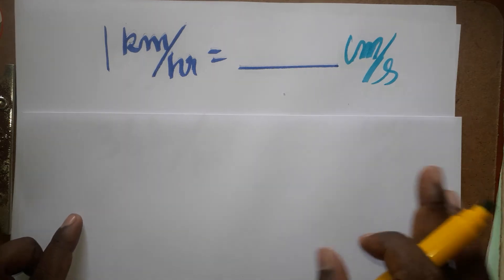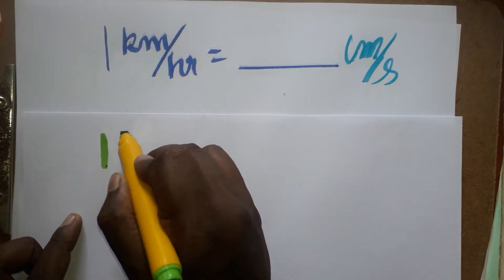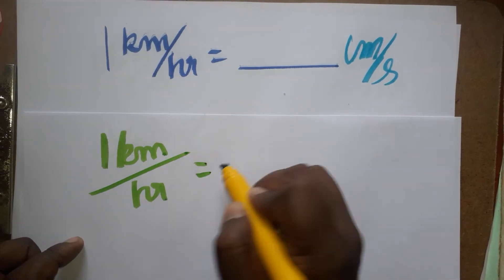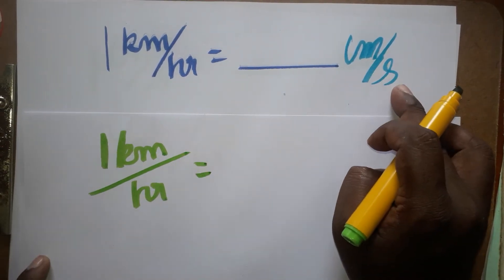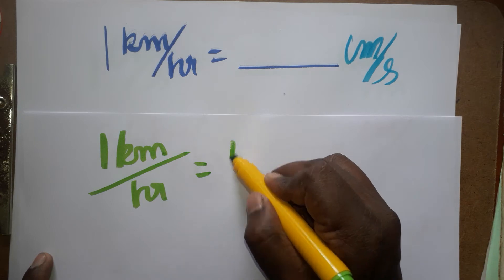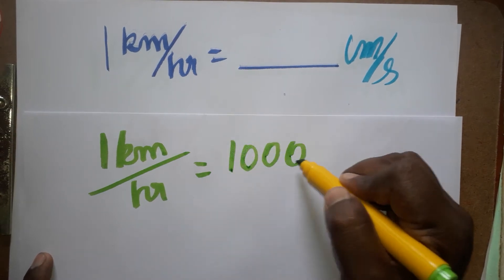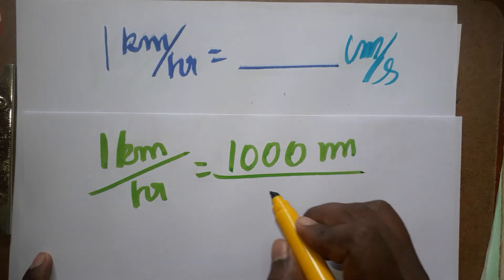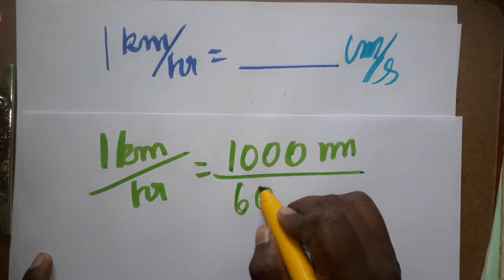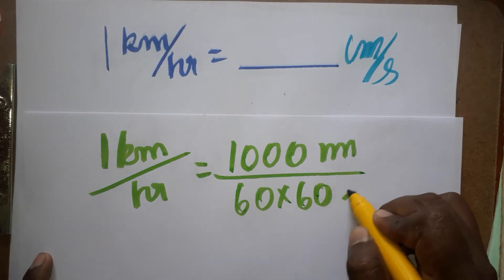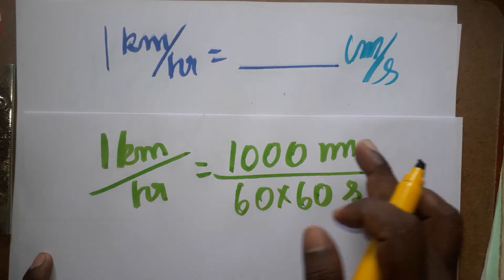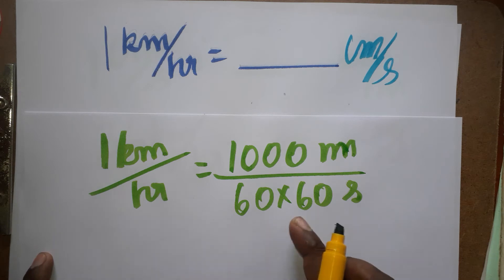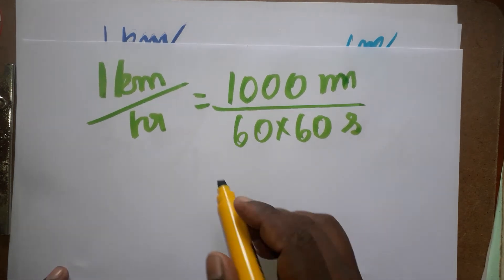The first thing: 1 kilometer per hour is equal to dash centimeter per second. So, 1 kilometer is a thousand meters. 1 hour is 60 minutes, 60 seconds, so 60 into 60 will give 3600 seconds. 1 kilometer is thousand meters, 1 hour is 60 into 60 seconds.